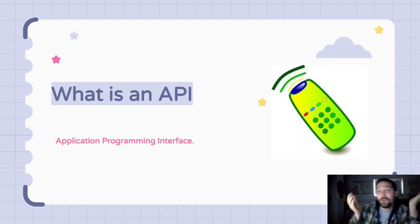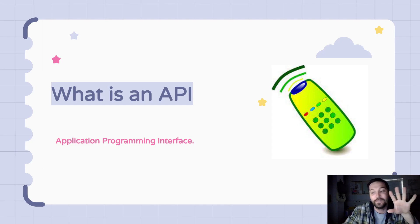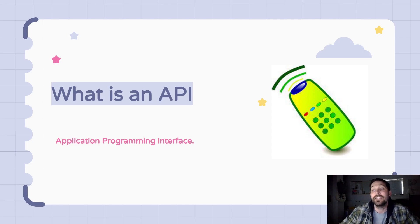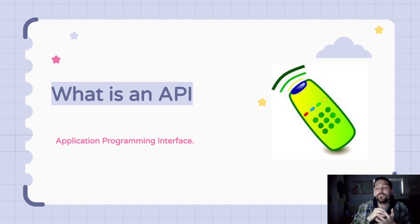Let's start with what is an API. An API is basically a remote control. If you do a Google search for 'what is an API,' you'll get a hundred different people with slightly different variations of this. But basically, an API is an interface — it's how you interact with something else. It's an interface for programming an application.